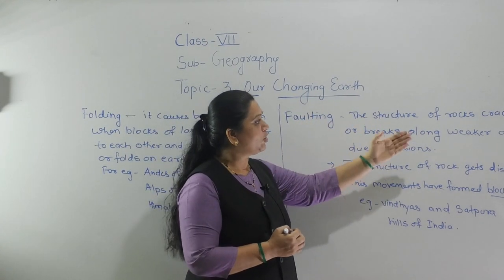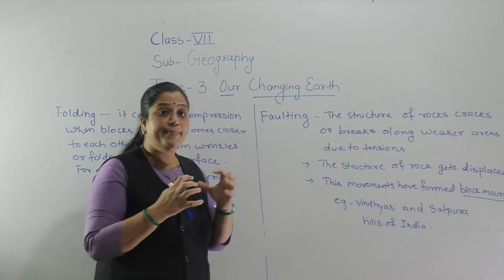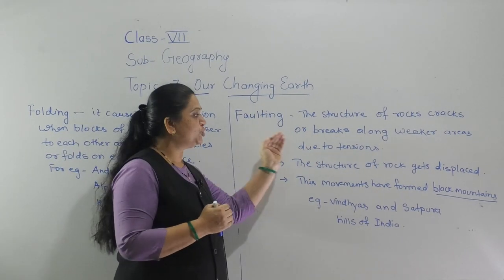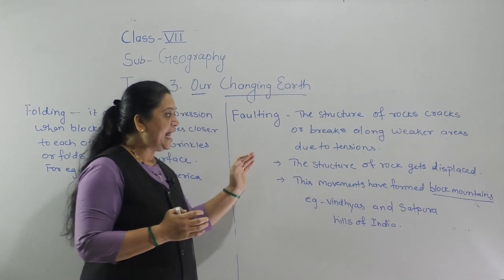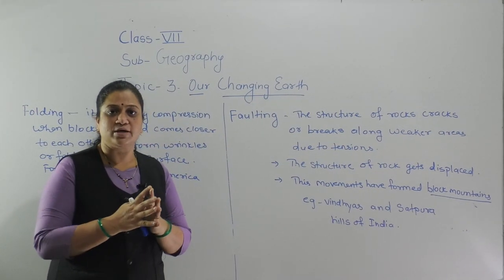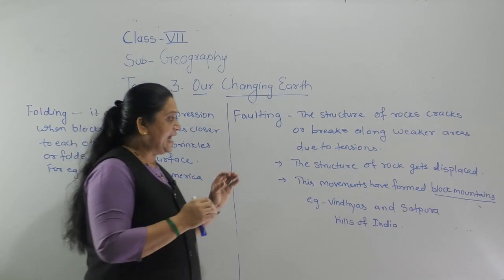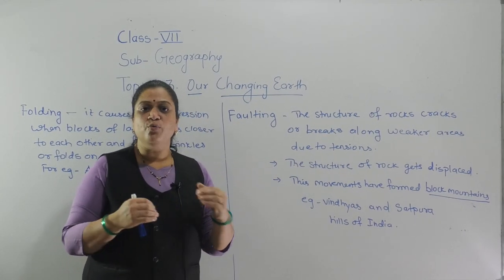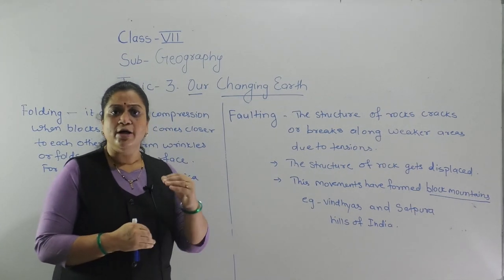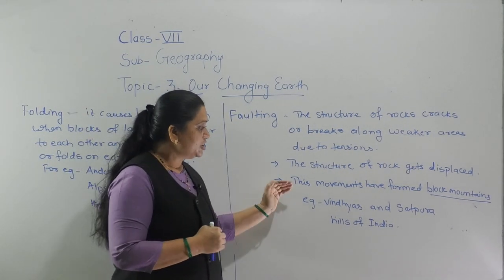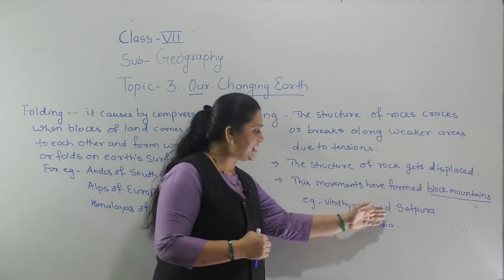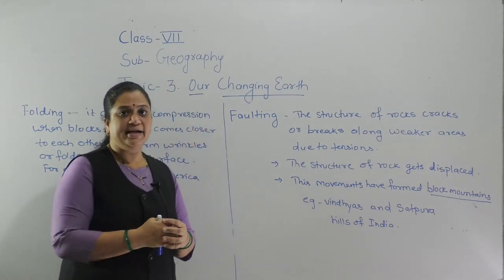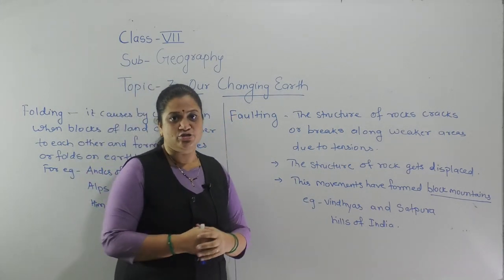The second structure is faulting. The structure of the rocks cracks or breaks along weaker areas due to tension. The rock structure gets displaced and these movements form block mountains. Examples are the Vindhyas and the Satpura hills of India, which are created because of the faulting structure.